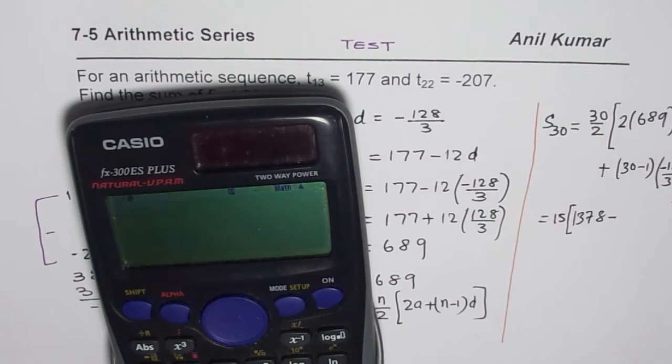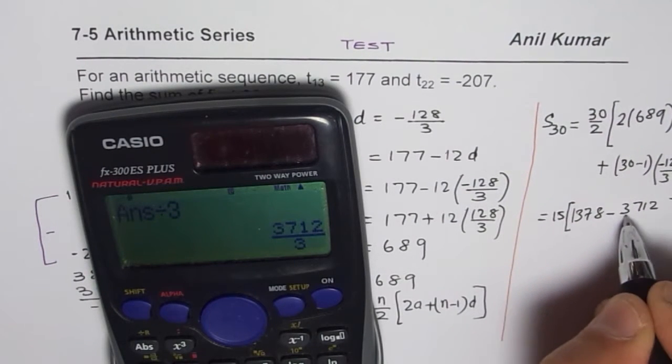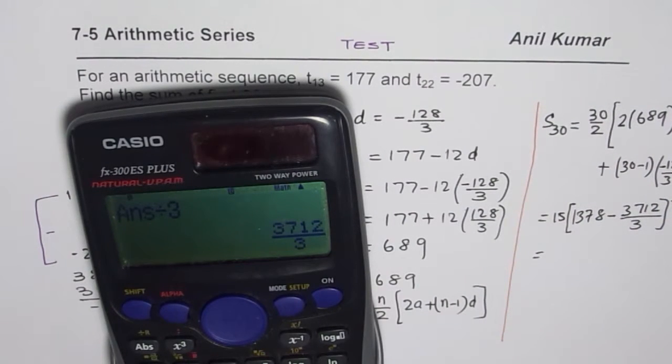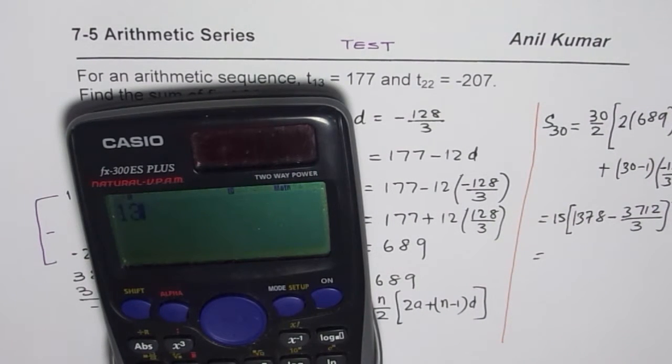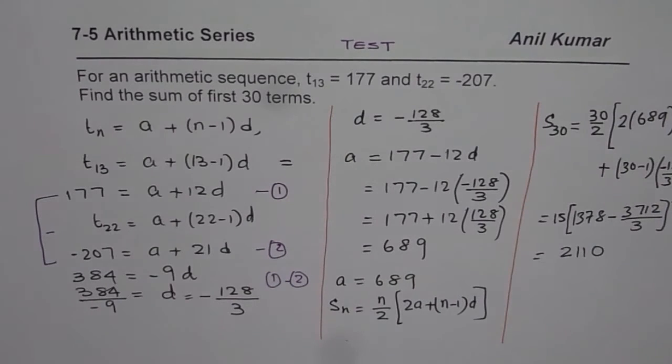We get 3712/3. My calculator gives fractions, which is good. So 1378 - 3712/3, then multiply by 15, and we get 2110. So the sum of 30 terms is 2110.